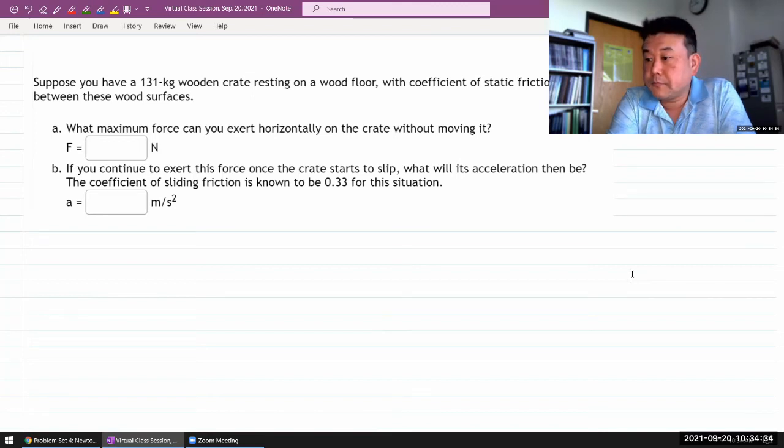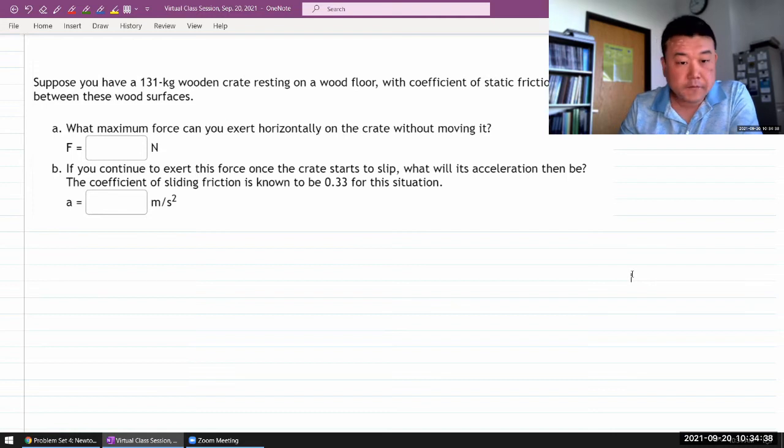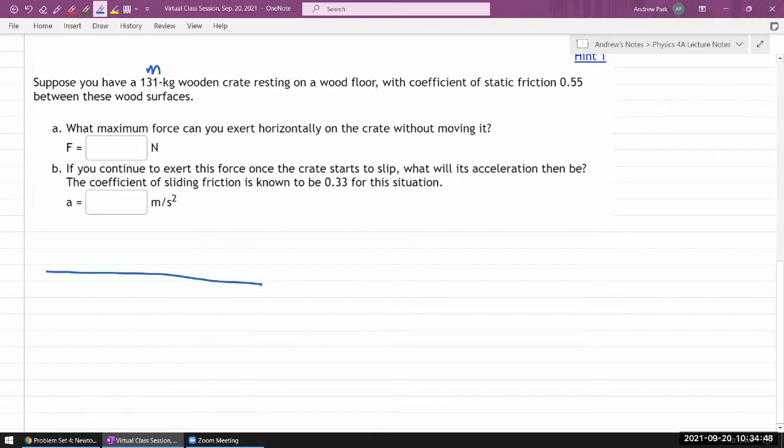So, it says suppose you have some mass of wooden crate resting on wooden floor. Let me just start sketching it. I have some floor and I have some crate sitting on it. We do coefficient of static friction 0.55. So this is my coefficient of static friction between these wood surfaces.